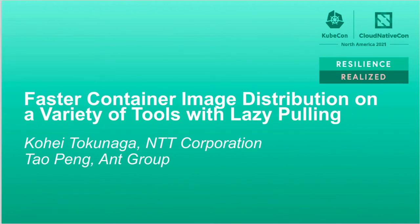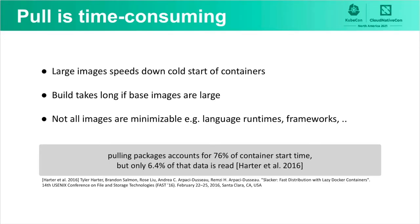Today we will introduce and deep dive into a faster container image distribution technique discussed in the community, which is called lazy pulling. Pulling container images is known as one of the time-consuming steps in the container lifecycle. This has affected various kinds of use cases, including batch job execution and building images. There are efforts to minimize the size of container images, but not all images are minimizable. Research shows that pulling packages accounts for 76% of container start time, but only 6.4% of that data is read.